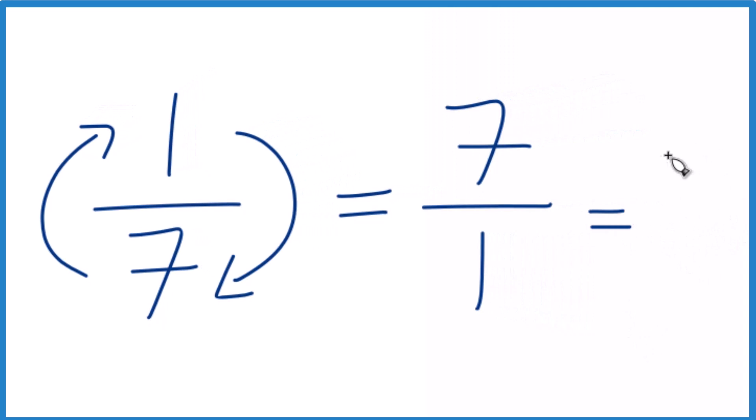And if you divide 7 by 1, you get 7. So in answer to our question 1/7, we find the reciprocal, we end up with 7.